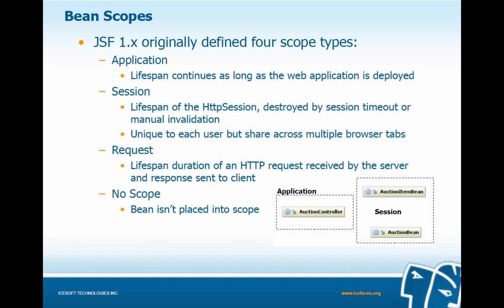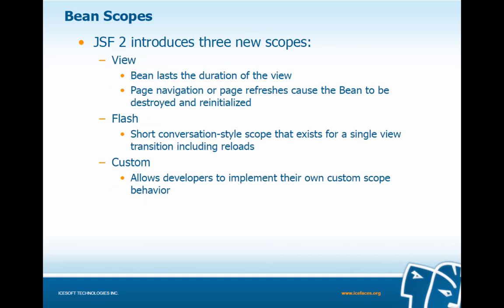JSF 1.1 and 1.2 originally defined four scope types. Application scope has a lifespan that continues as long as the application is deployed. Session scope has a lifespan of the HTTP session and is destroyed by session timeout or manual invalidation — a session is unique to each user but can be shared across multiple browser tabs. Request scope's lifespan is the duration of an HTTP request received by the server and a response sent back to the client. If there is no scope, a bean isn't placed into scope. JSF 2 introduces three new scopes: View scope, where the bean lasts the duration of the view; Flash, a short conversation-style scope for a single view transition; and Custom scope, which allows developers to implement their own custom scope behavior.